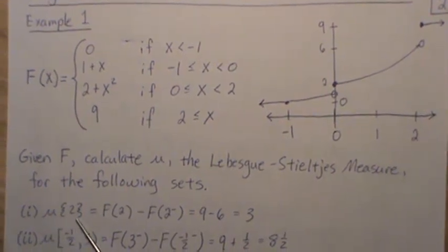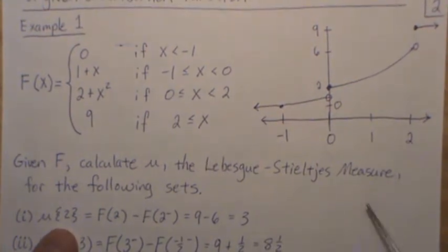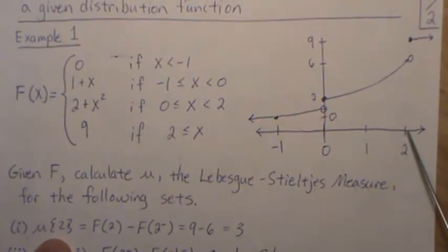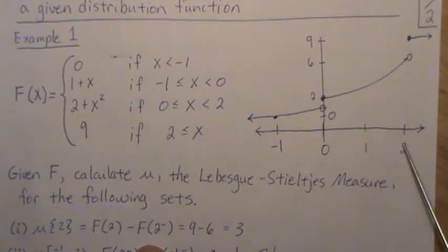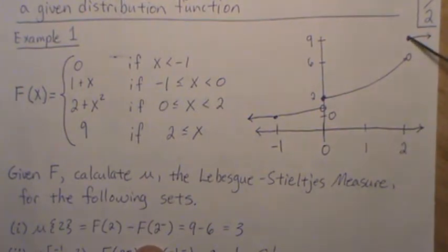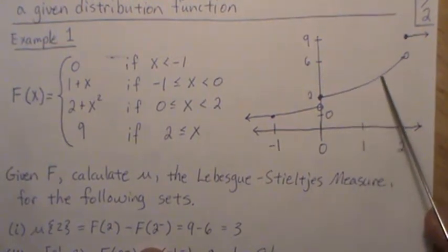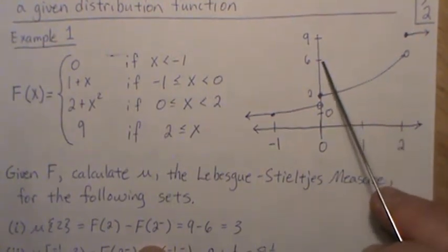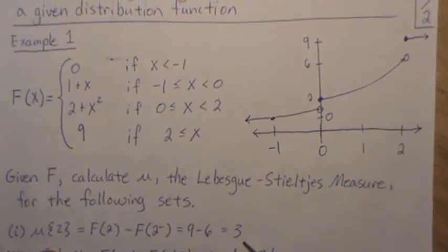Let's calculate mu of {2}, the point 2. In a previous video we showed that is F(2) minus F(2-), the left limit. F(2) is 9, and the left limit as it approaches 2 is 6. So the Lebesgue-Stieltjes measure is 3.